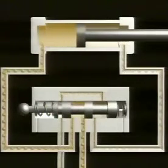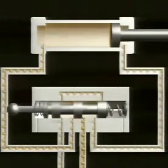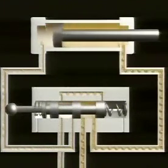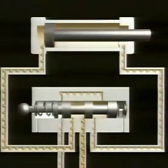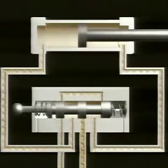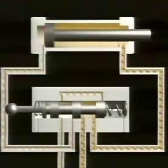When the valve is actuated, the piston advances or retracts. Piston motion can be stopped and reversed at any point.